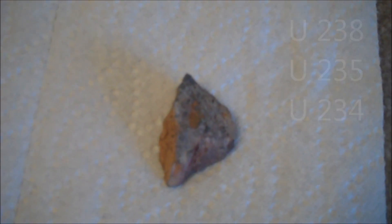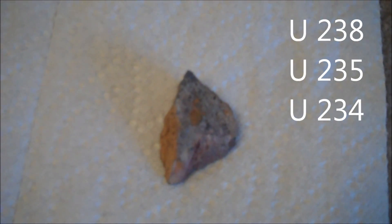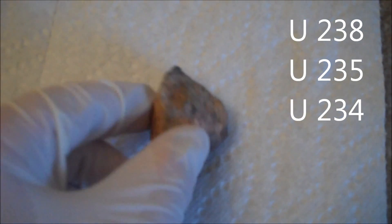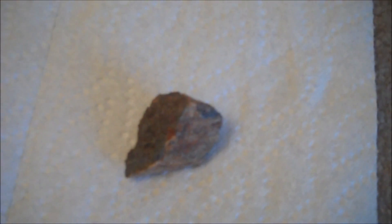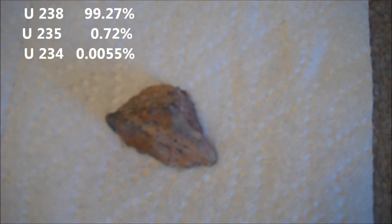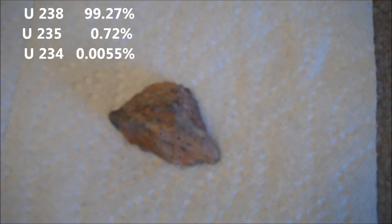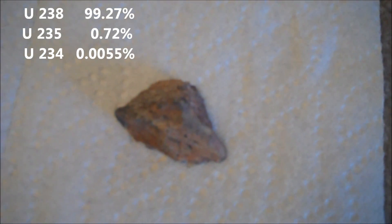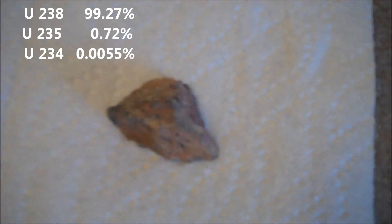Natural uranium is composed of three major isotopes: Uranium 238, Uranium 235, and to a lesser degree, Uranium 234. The percentages are very skewed. Uranium 238 comprises 99 plus percent of natural uranium. Uranium 235 makes up just seven-tenths of one percent. Uranium 234 exists in only 55 one-thousandths of one percent.